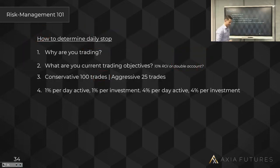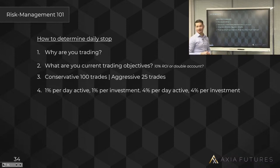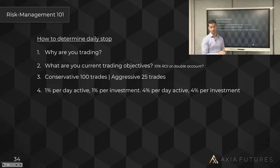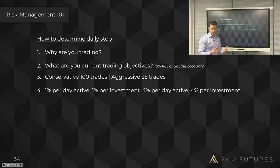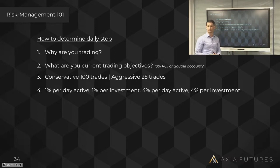How do you determine a daily stop? The best way is to ask: why are you trading? If you told me you want to be rich and a millionaire, your daily stop is very different from someone who just wants to make rent and pay their mortgage. If you want a 100% return per year, you're not going to get away with a daily stop of 0.5% of your account — it's got to be proportional. If you want 100% return, you probably need to be risking 5% of your account daily.